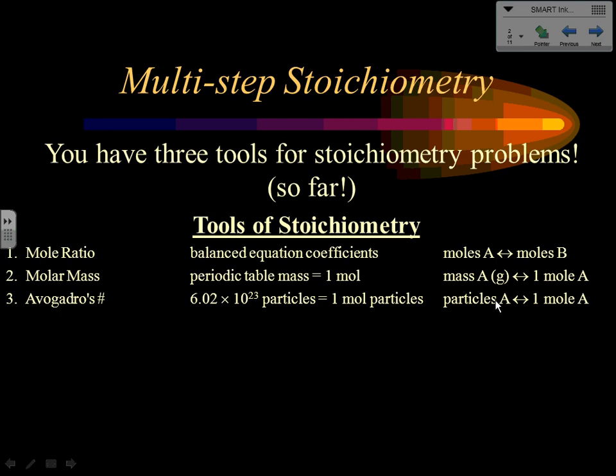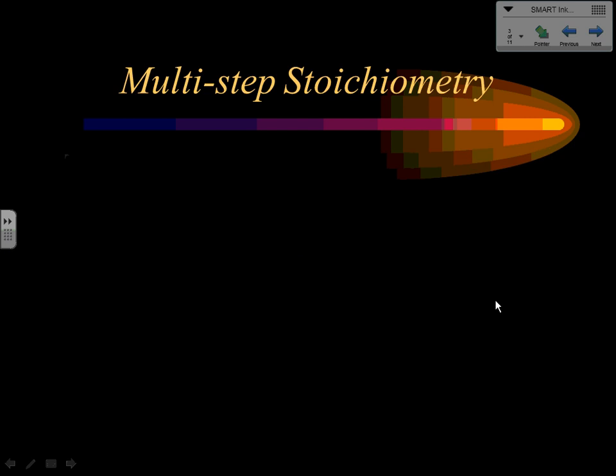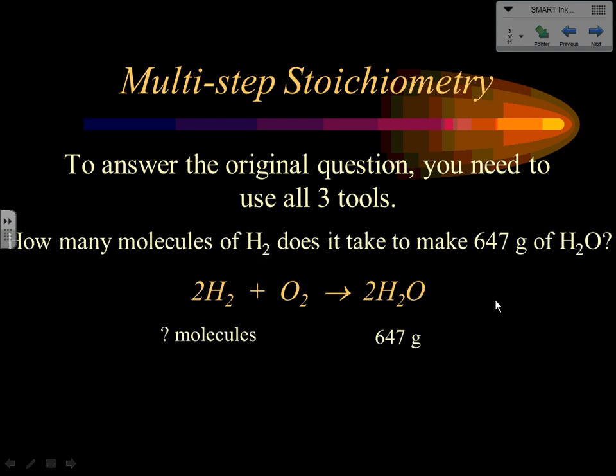These are the three tools typically used in stoichiometry. Every problem will use the mole ratio — that's what makes it stoichiometry — but you may also use the second and third tools. To answer our original question, we'll end up using all three tools, because the problem mentions molecules and grams and requires going from one substance to another, making it a three-step problem.